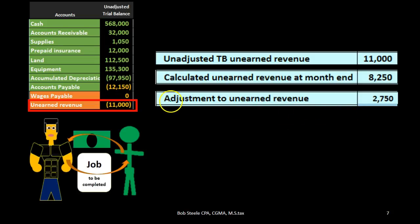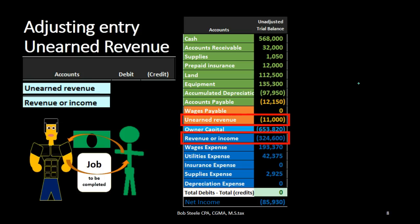We take the difference and get $2,750, meaning this $11,000 needs to go down by $2,750 to end up with the amount that we were told is still unearned of $8,250. How would we do that? Well, we already see our journal entry — we're just going to plug the numbers in.